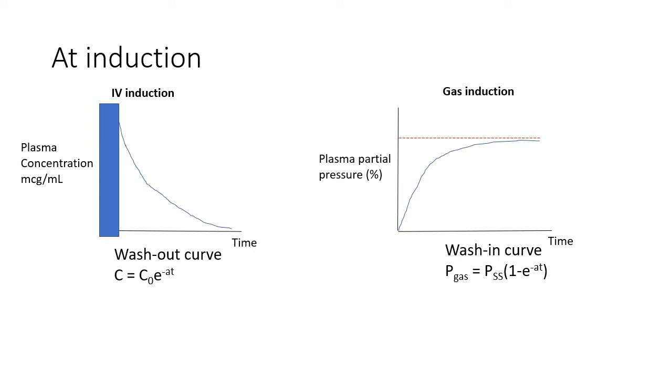First, let's discuss induction. You may recall that intravenous induction is characterized by a spike in plasma concentration followed by a washout curve, and that on the other hand, inhalational induction is modeled using a wash-in curve. Here's the thing. For inhalational induction, we know for certain the value of the asymptote towards which the partial pressure will tend. That's the dotted line. That's what we dial on the vaporizer.